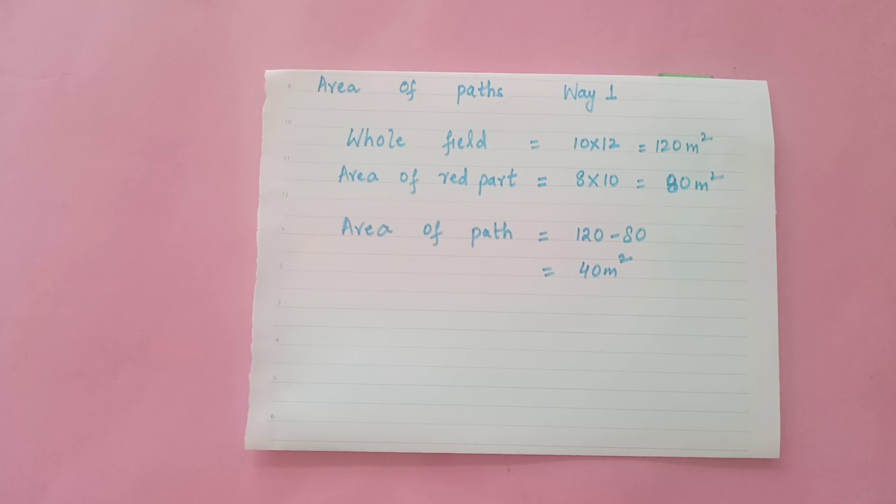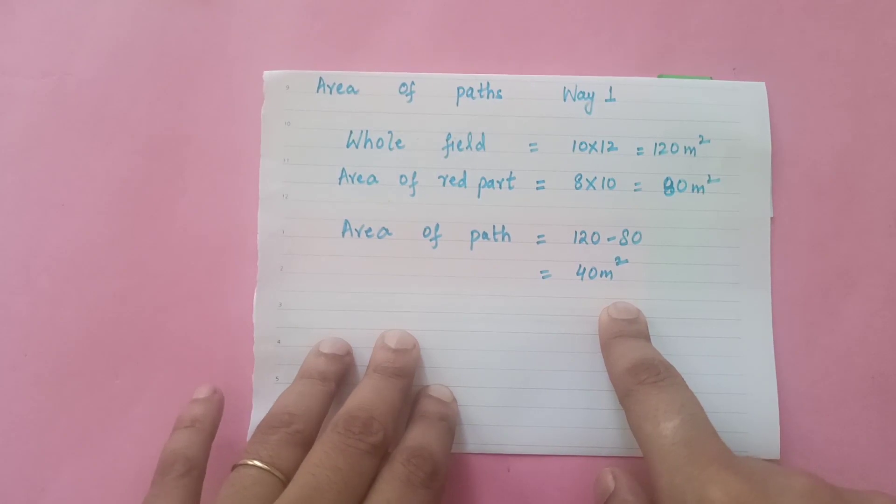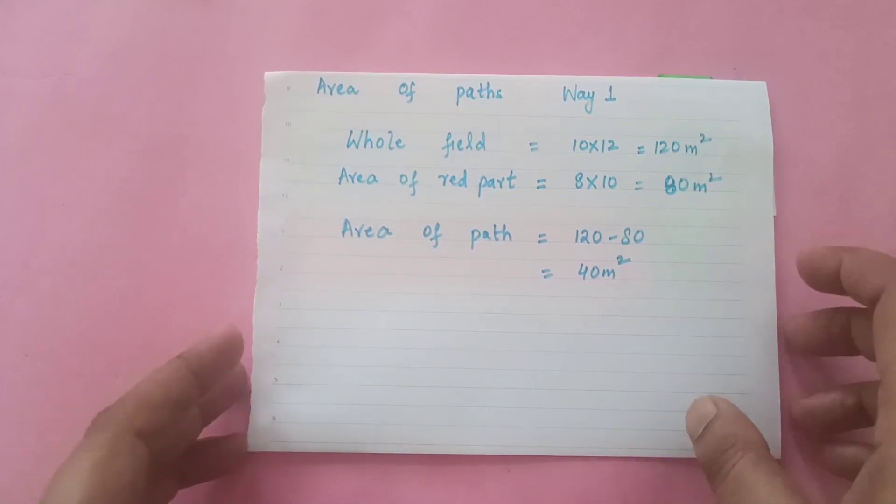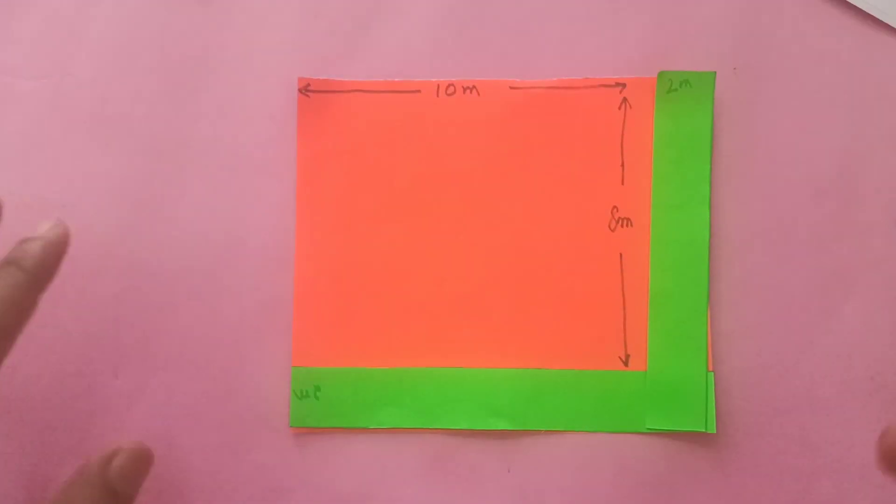And the area of the red part, 8 into 10 - we found the dimensions of the red part. And now area of the path can be found by subtracting 80, that is the area of the red part, from the whole field. So that is 40 meter square. So I hope it is clear here.